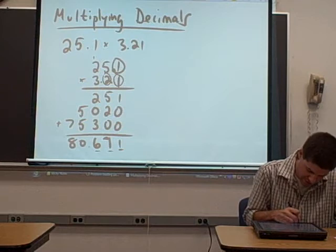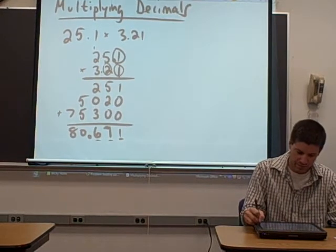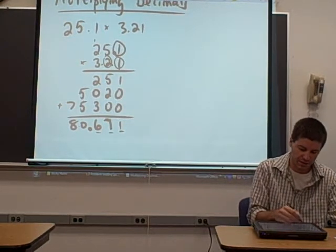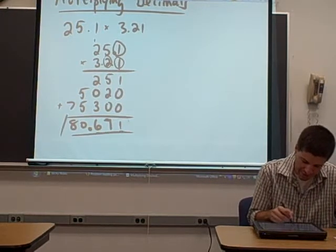What that means is we have to have three digits to the right of the decimal place in our answer. So we count one, two, three digits. We put a decimal place right in there. So 25.1 times 3.21 equals 80.671. That is our answer.